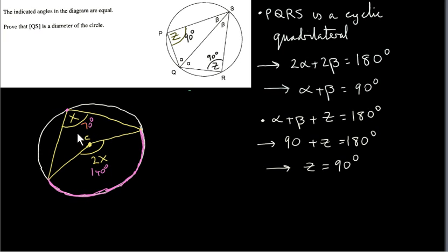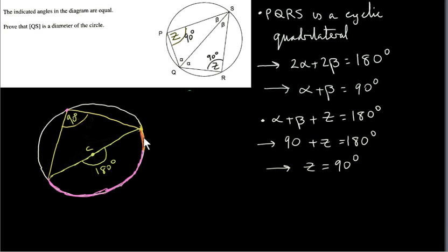I proved this result in another video. A very important deduction of this theorem occurs when the angle at the center is 180 degrees. That means the angle at the circle is half of 180 degrees, which is 90 degrees. So if the arc happens to be a semicircle and the angle at the center is 180 degrees — the radii from the center to either end of the arc lie along a straight line — then this angle at the circumference is 90 degrees. So we talk about the angle in a semicircle, because this is a diameter of the circle.